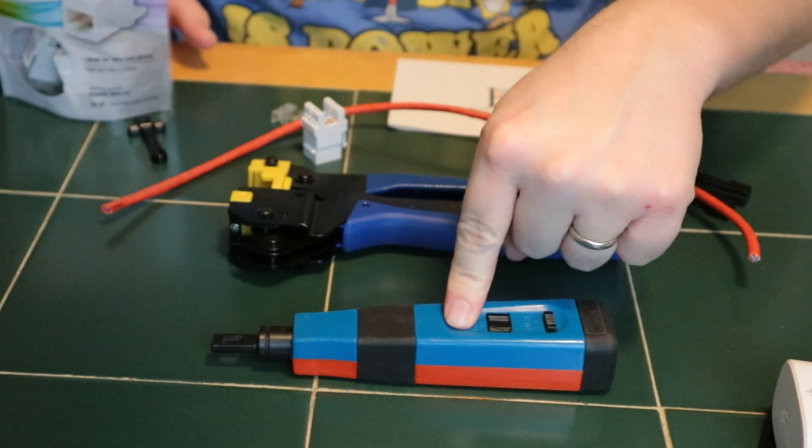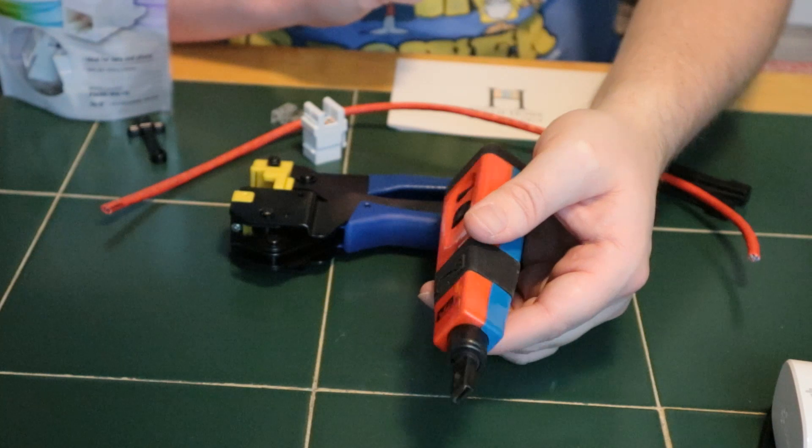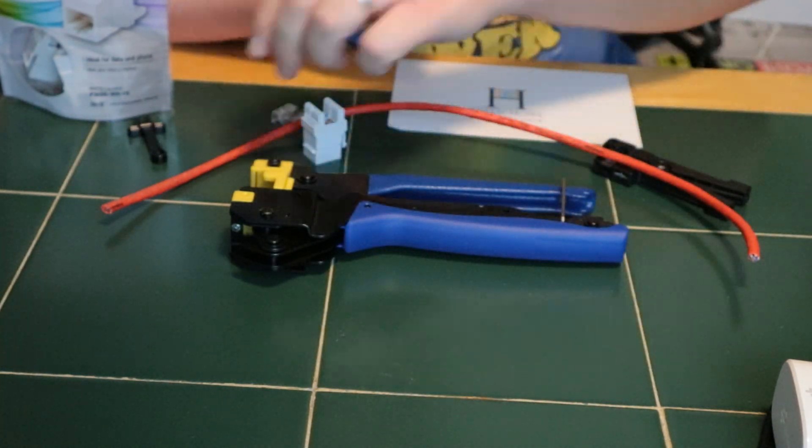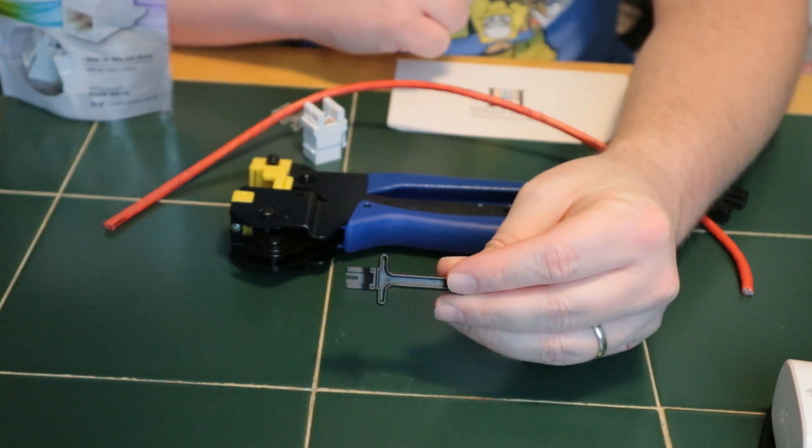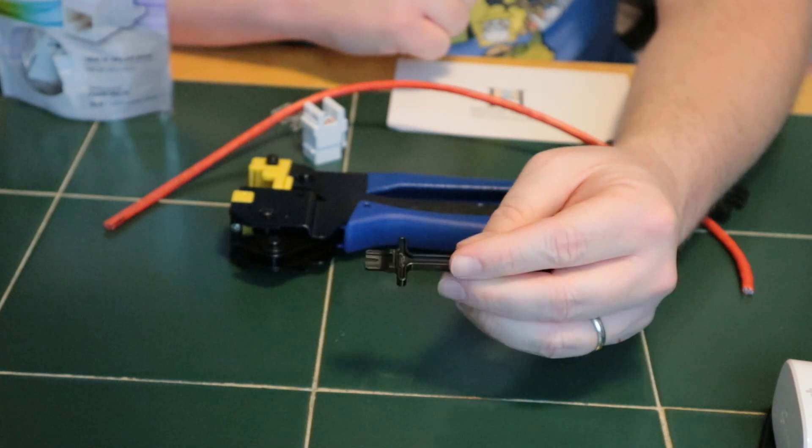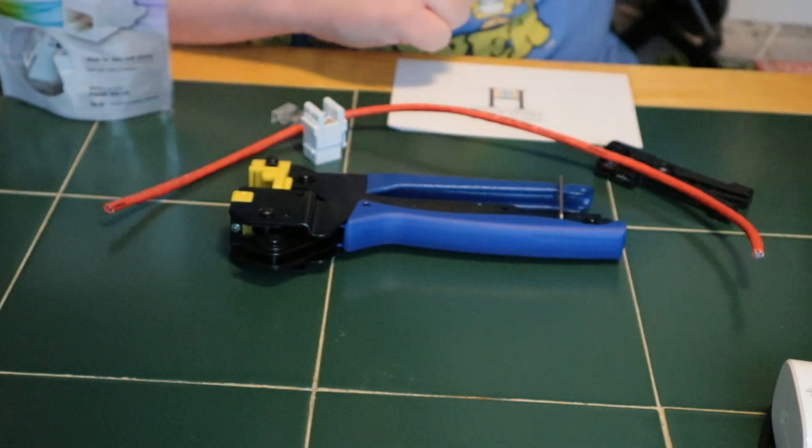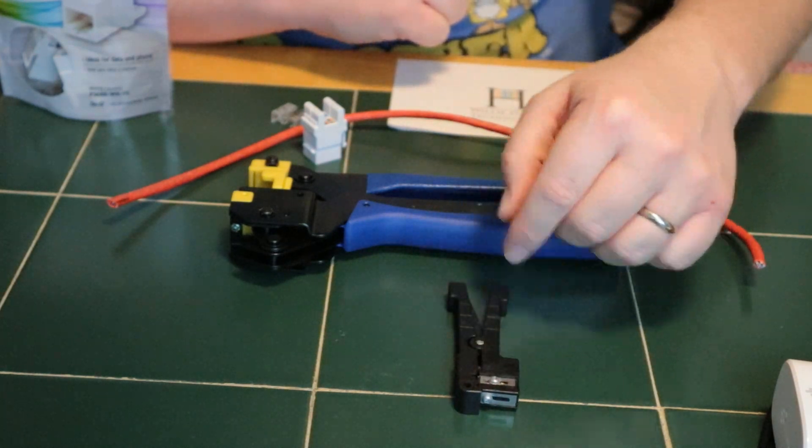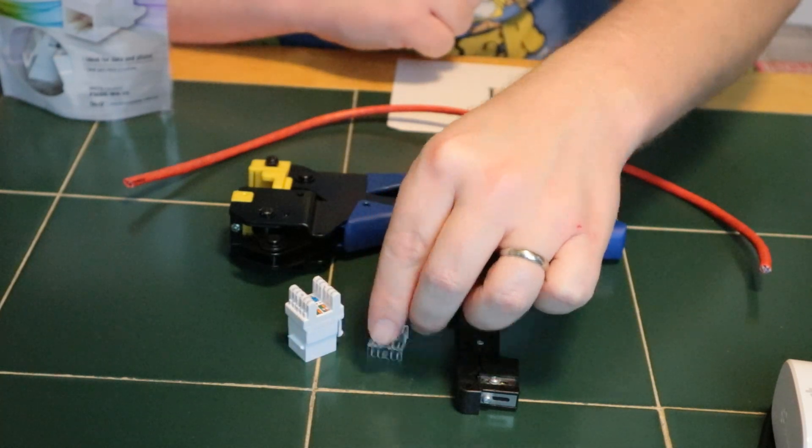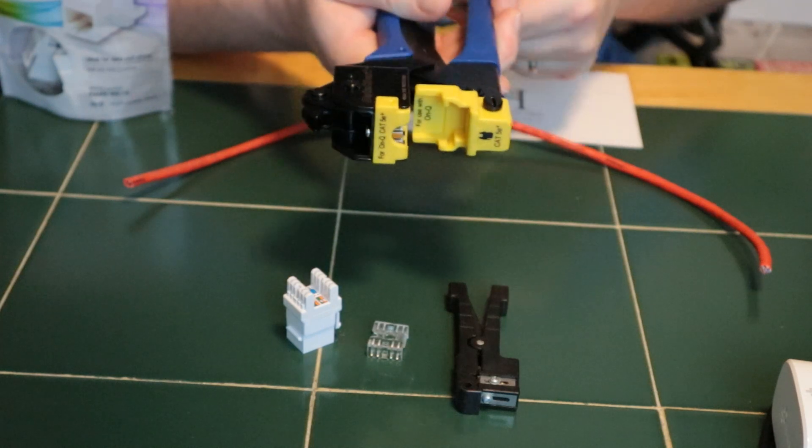We will not be using the standard punch down tool, so I'm going to take this and put it back in the tool bag. I will not be using the supplied plastic 110 whatever they call this thing - this is going to go back in the tool bag. We will be using our Ideal cable stripper and we will be using this jack and the Data Shark tool.